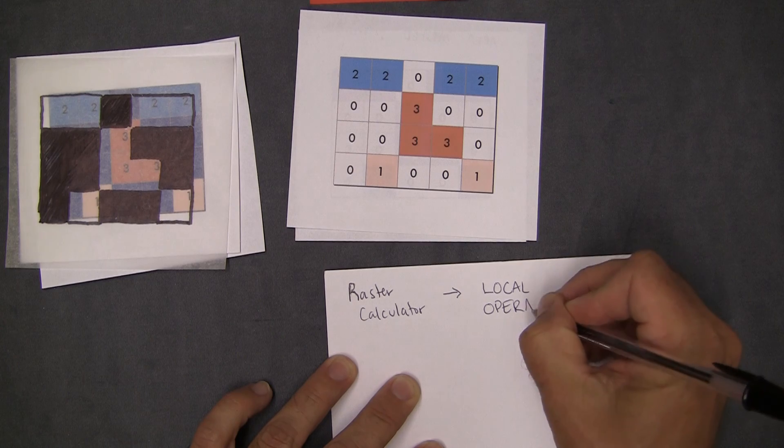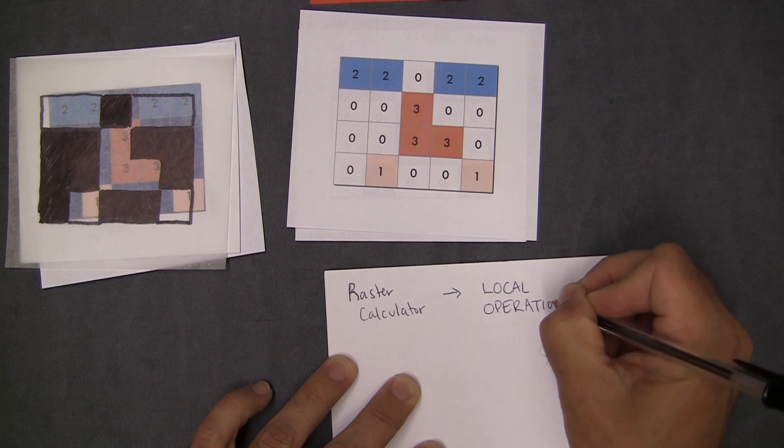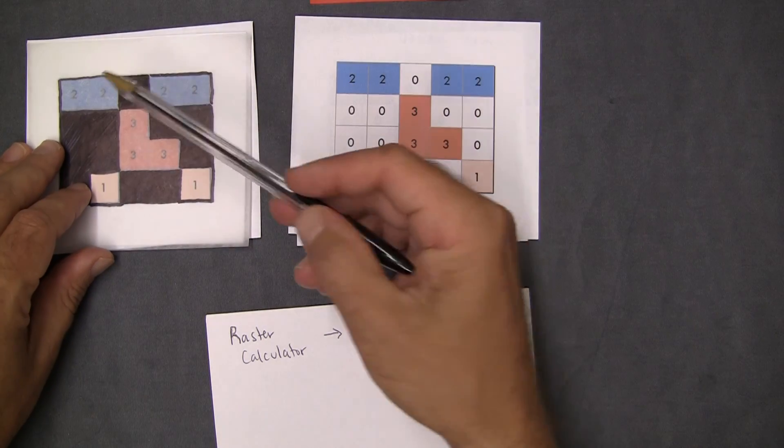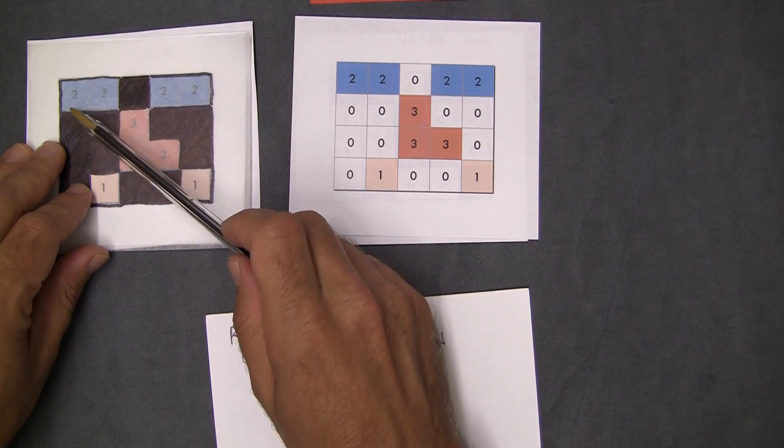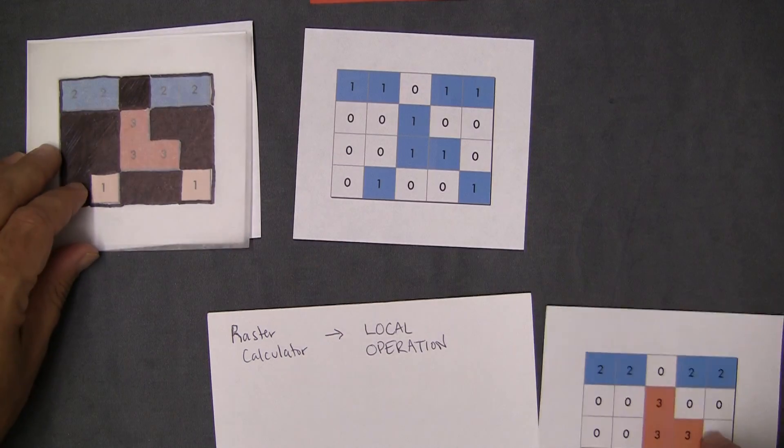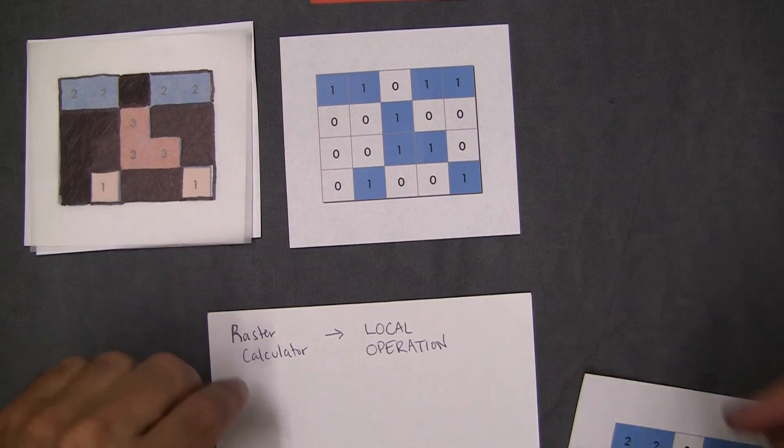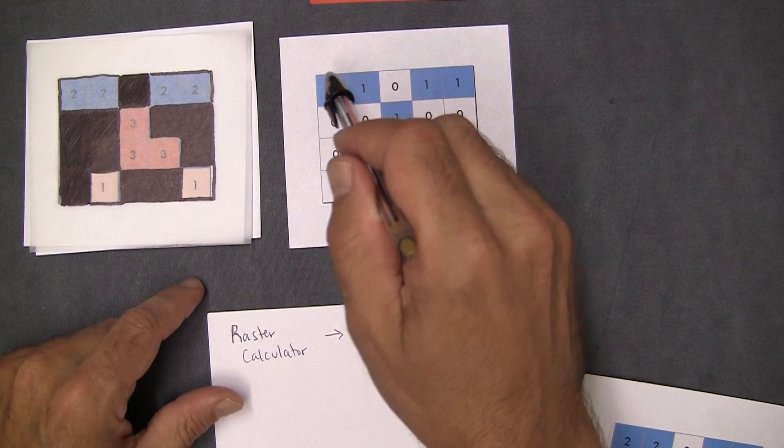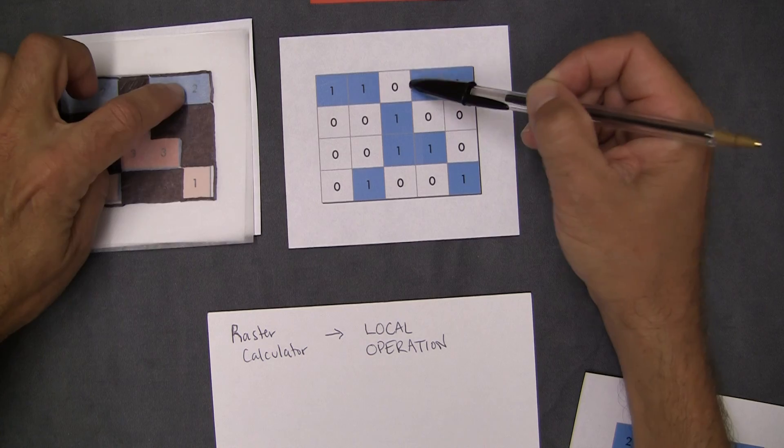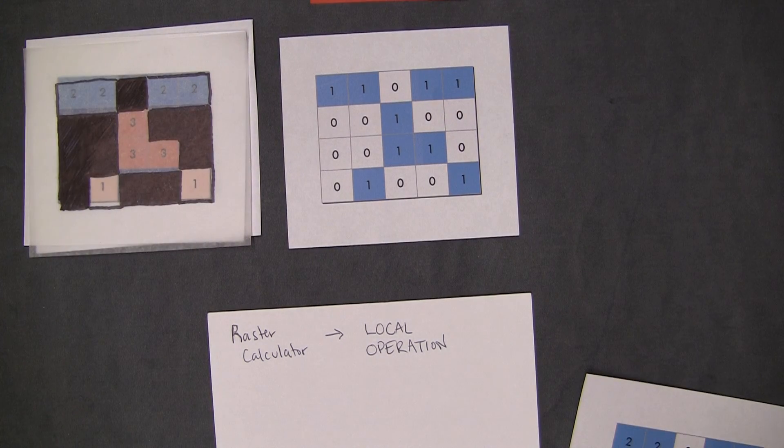But I said more generally that was an example of a local operation, right? And I used that because what we were doing is comparing values at the same locale across two layers. We're comparing values at each location across an image or across a raster.